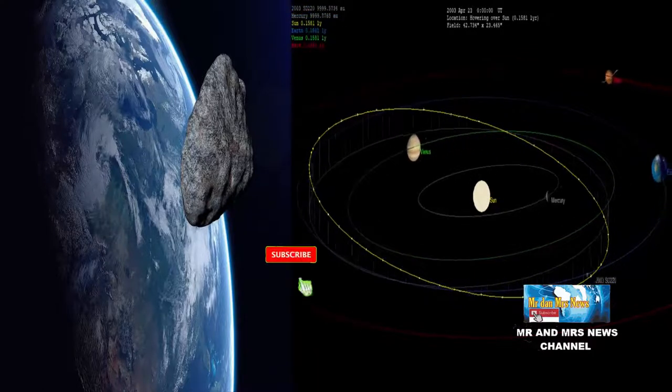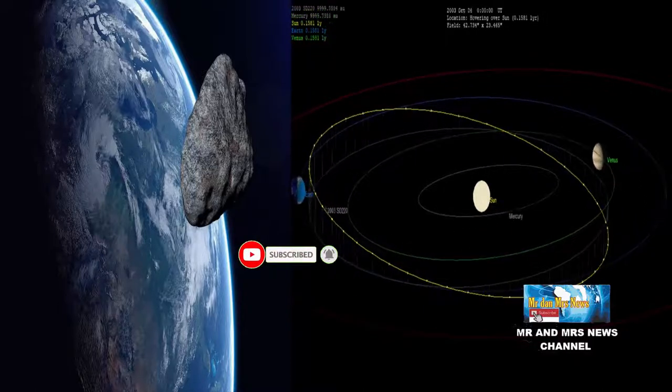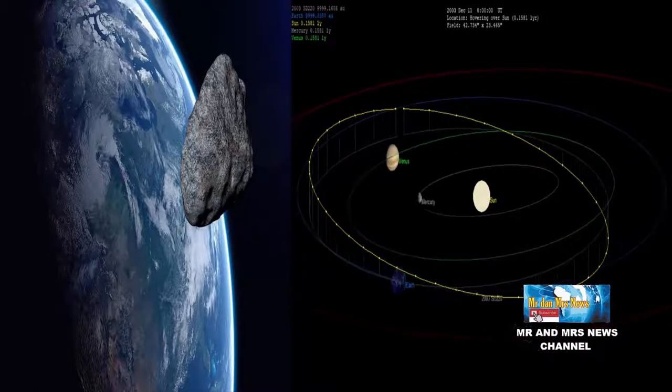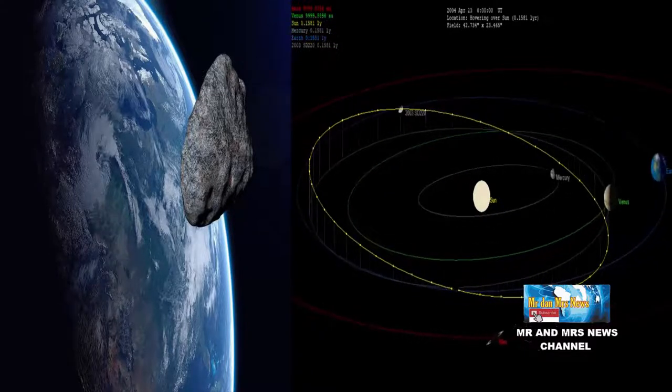Asteroid ini termasuk dalam kelas Aten, artinya orbit asteroid bersilangan dengan orbit bumi saat mengelilingi matahari. Tetapi, asteroid ini lebih sering berada di orbit dalam matahari seperti dikutip oleh Science Times.